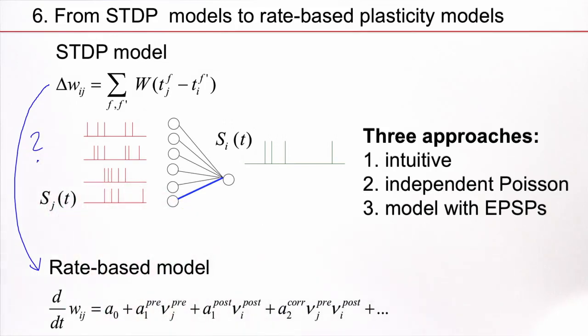And I will use three different approaches. I will start with an intuitive approach. Then I will present a more mathematical approach based on Poisson neurons. And finally, I will look at a more realistic model of a neuron which really uses excitatory postsynaptic potentials.